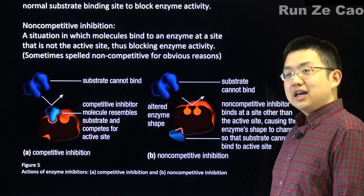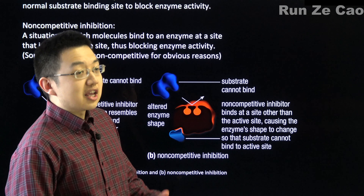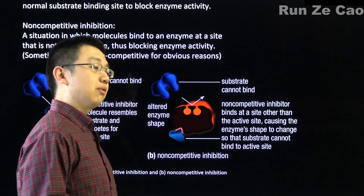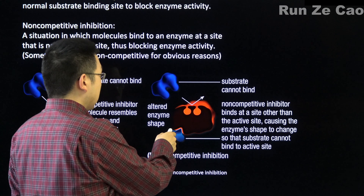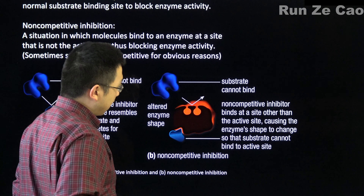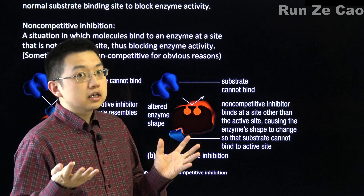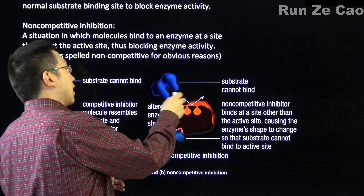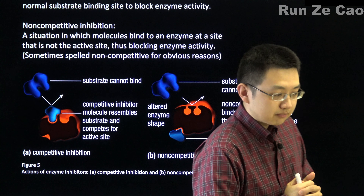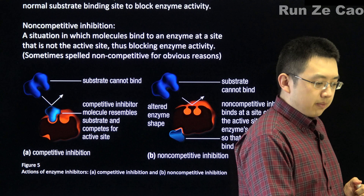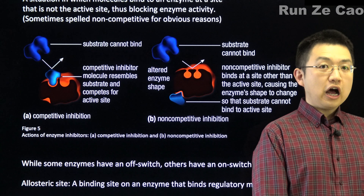For non-competitive inhibition, binding occurs somewhere else on the enzyme — for example, attaching a phosphate group via phosphorylation. Some functional groups move aside, others get repelled or attracted, and in the end the enzyme shape changes so the substrate cannot bind as effectively. Non-competitive inhibition may be reversible or irreversible.